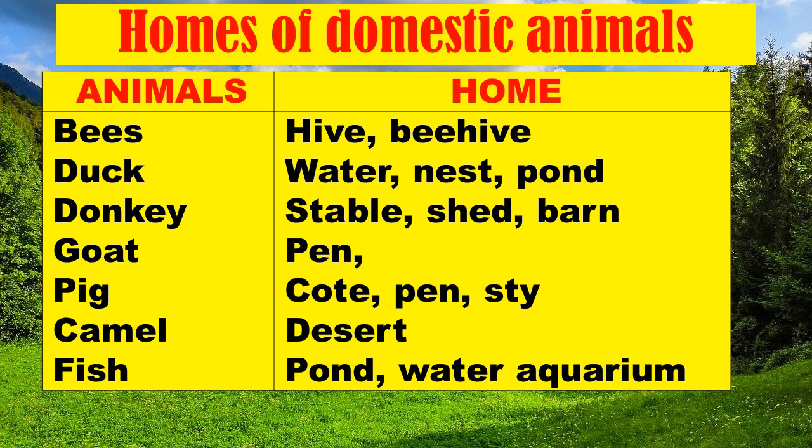Bees live in a beehive. Duck lives in water or a nest. Donkey lives in a stable or shed. Goat lives in a pen. Pig lives in a pen or sty. Camel lives in the desert. Fish lives in a pond, water, or aquarium.